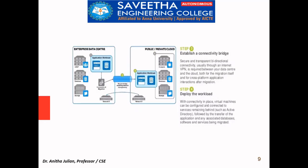Coming to the third step, the resources have to be sent across, so we have to establish a connectivity bridge. As you can see in the middle of the diagram, a bridge-like structure is given. We are securing a transparent bidirectional connectivity, and this is usually done through an internet VPN. This is required between the data center and the cloud, both for migration as well as any cross-platform application interactions. The bridge needs to be maintained for the entire duration the service is running.